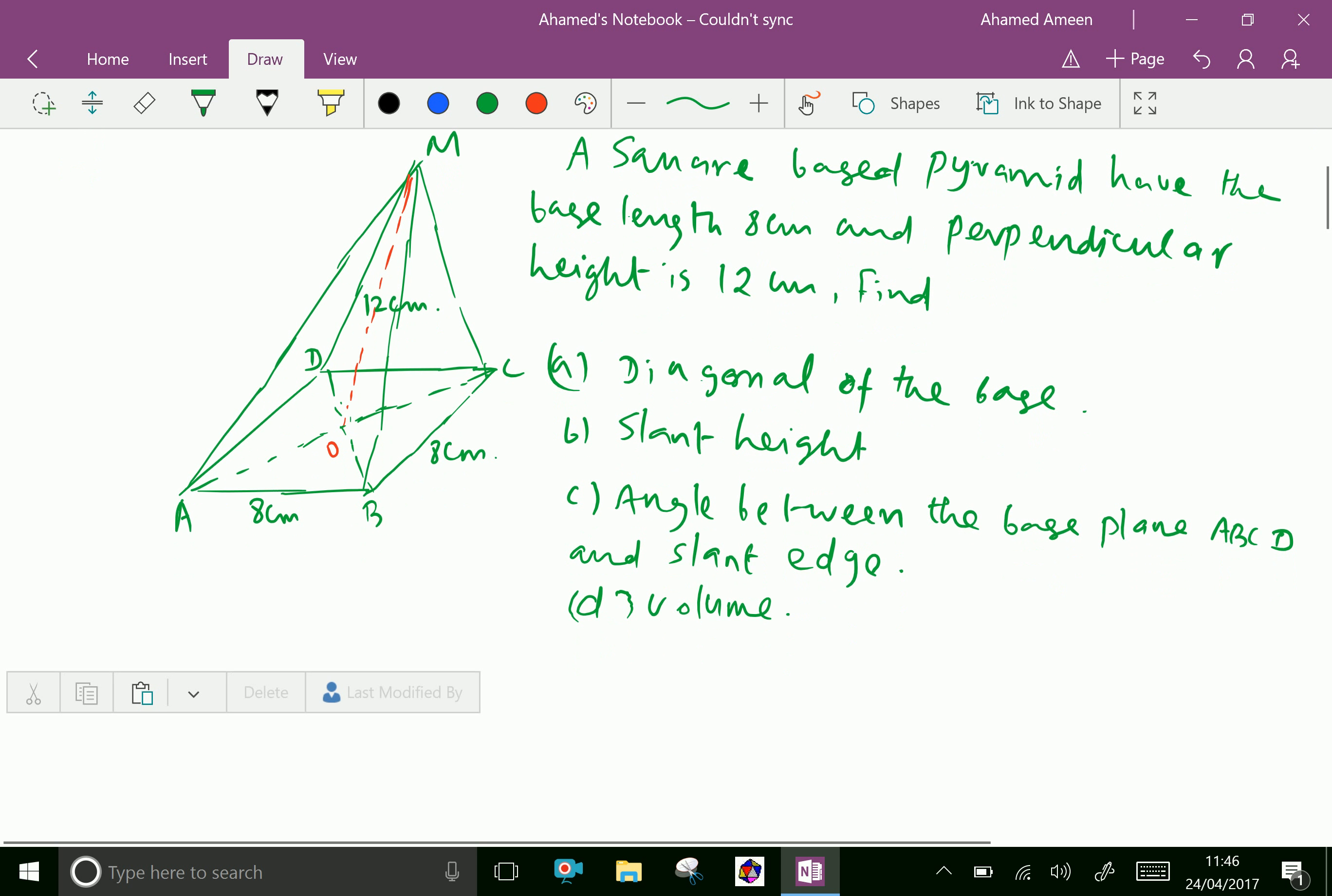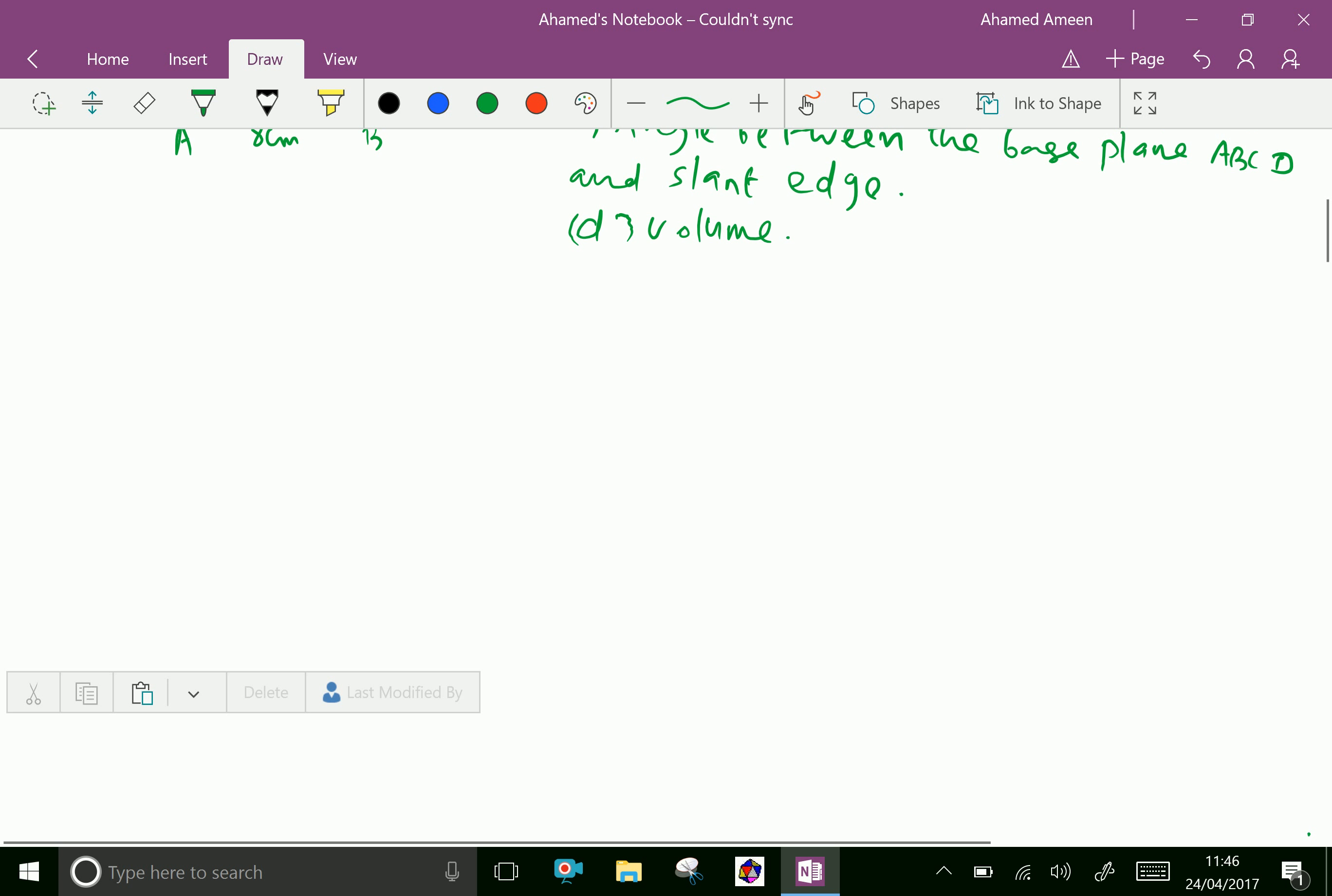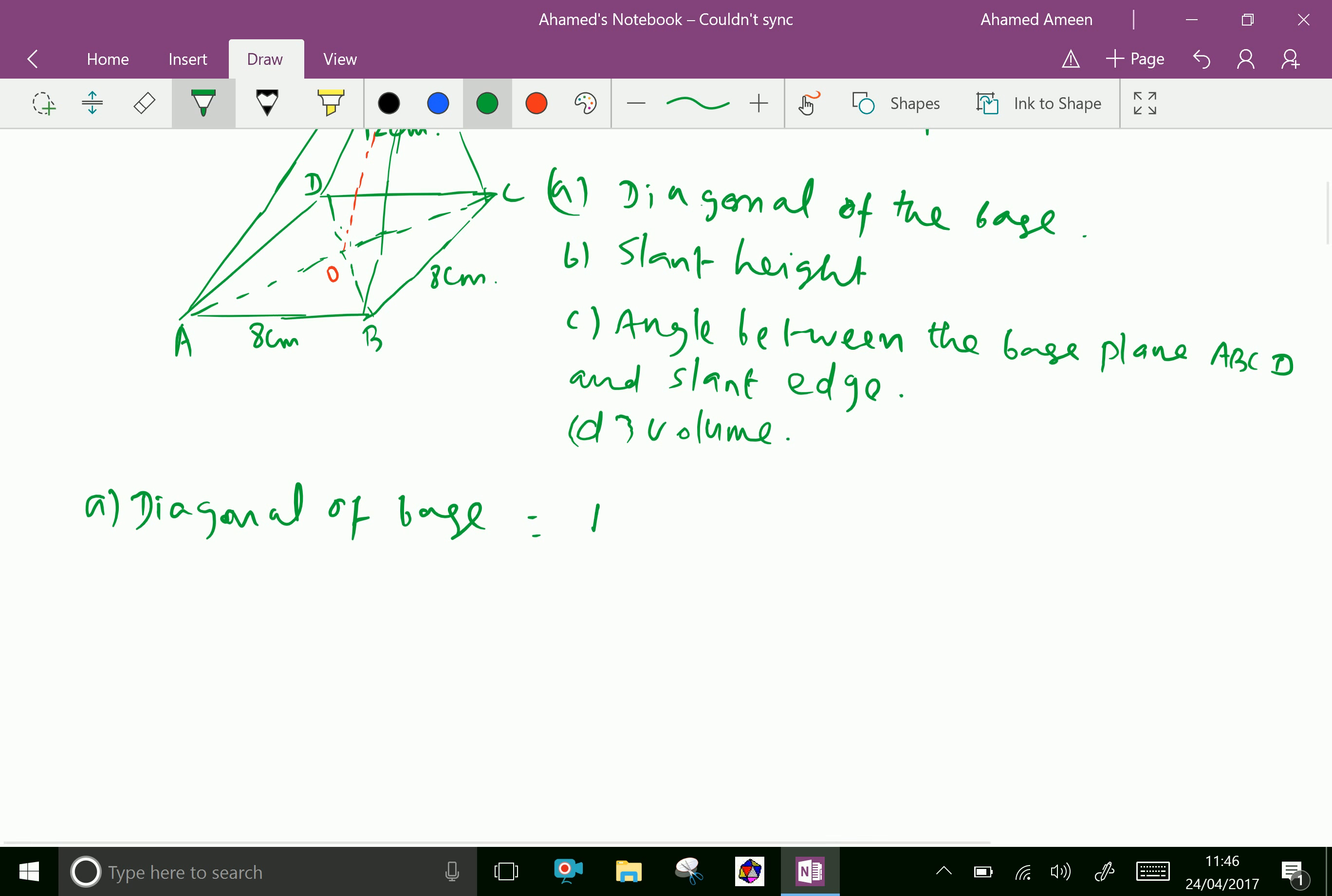Now diagonal of the base: AC equals square root of AB squared plus BC squared, which equals 8 squared plus 8 squared, equals 64 plus 64, which gives square root of 128 equals 11.31 centimeters.